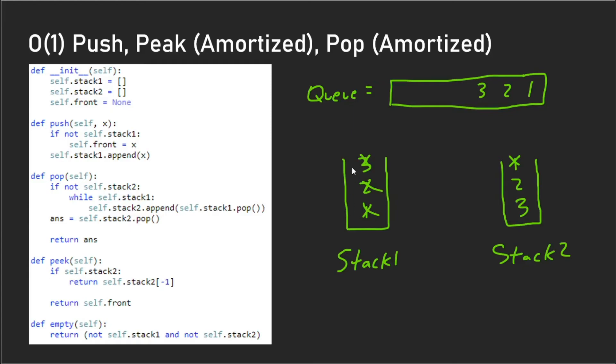And when we do a pop of the queue—so the second element we want to do a pop on would be two—what you'll notice is two is already at the top of stack two, so we just pop that and then we return that.